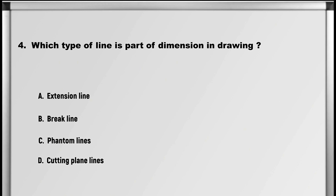Let's move on to question number 4: Which type of line is part of dimension in drawing? A. Extension line, B. Brake line, C. Phantom lines, D. Cutting plane lines. Answer: A. Extension line.